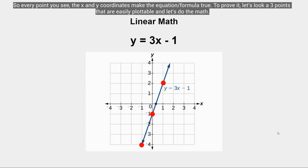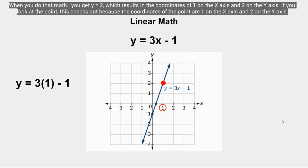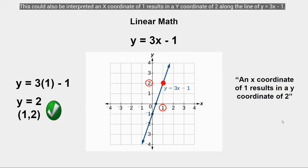To prove it, let's look at three points that are easily plottable and do the math. Starting with the top point: the x coordinate is 1. If we plug that into the formula, we get y = 3(1) − 1. Three times one equals three, minus one gives us y = 2. That results in coordinates of x = 1 and y = 2 on the y axis — and if you look at the point, this checks out because its coordinates are exactly (1, 2).